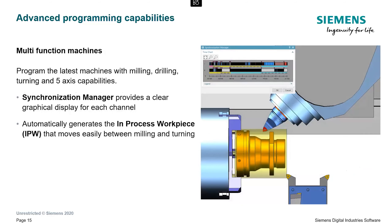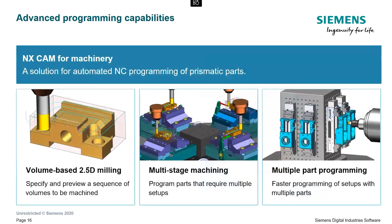NX offers a complete range of machining capability for the latest multifunctional machines that support simultaneous multi-axis operation. Using a graphical display, the synchronization manager provides interactive control for machining sequences across multiple channels. Keeping track of the in-process state of the workpiece is a critical component of effective mill turning. NX CAM automatically generates an in-process workpiece (IPW) to provide seamless transfer of workpiece configuration between milling and turning.